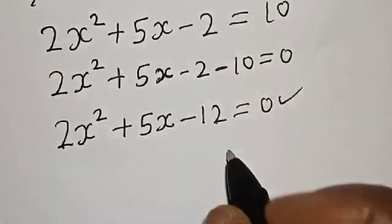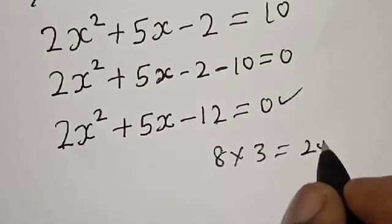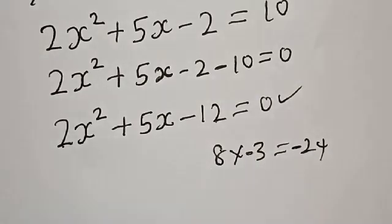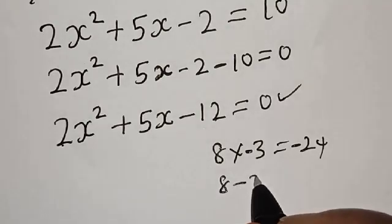If you have 8 multiplied by 3, this is 24. 8 multiplied by -3 gives you -24. Then if you have 8 - 3, this gives you +5.